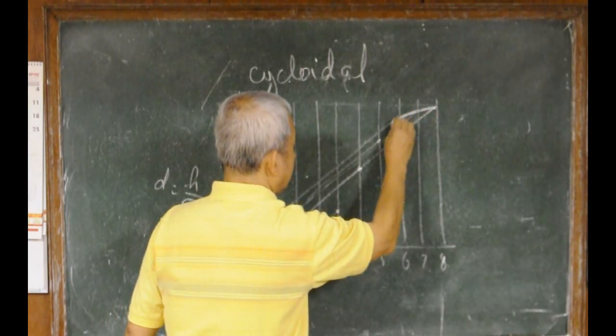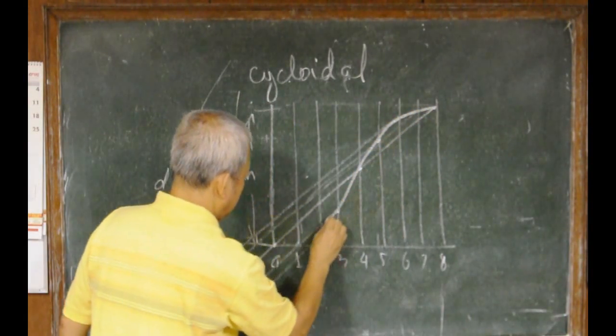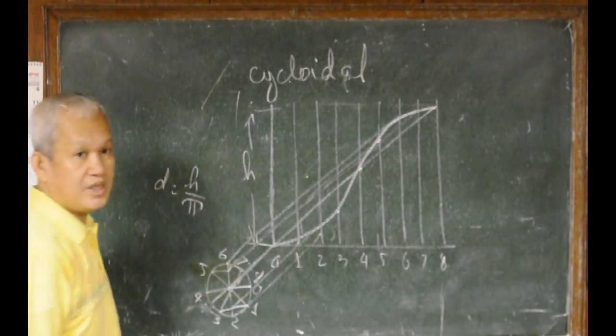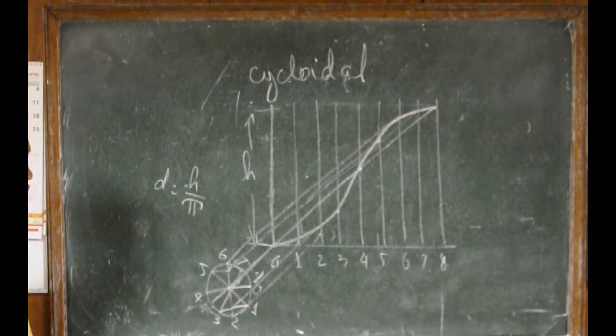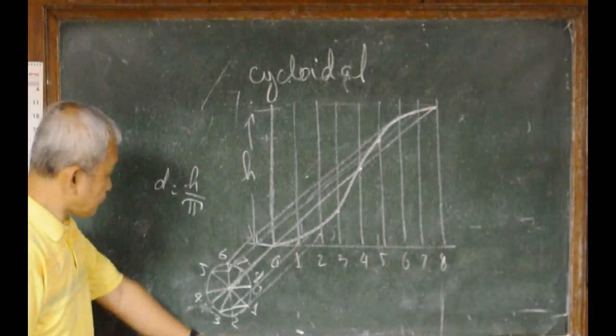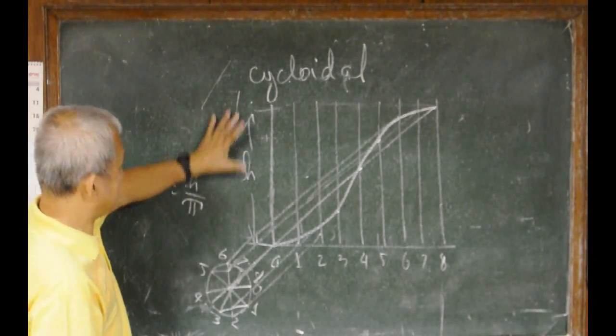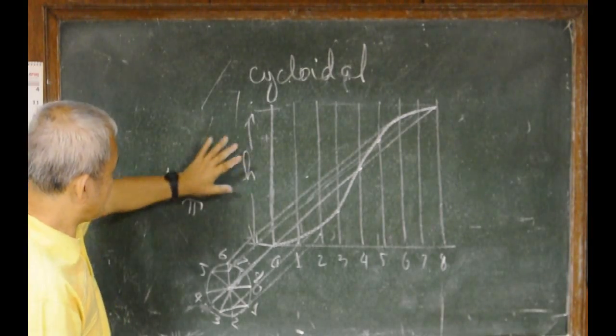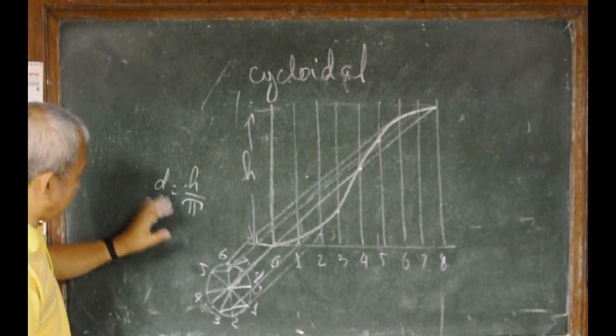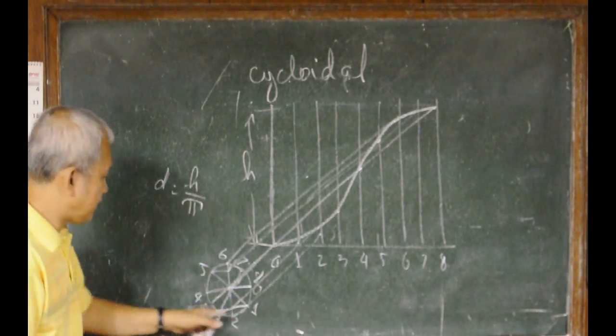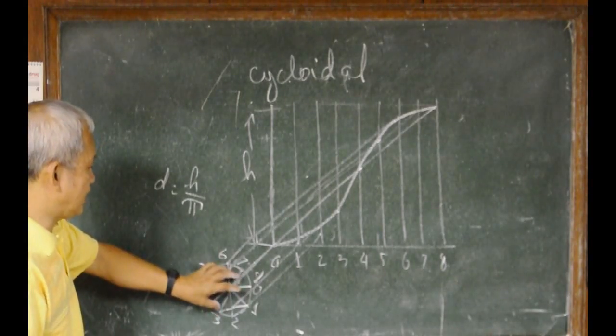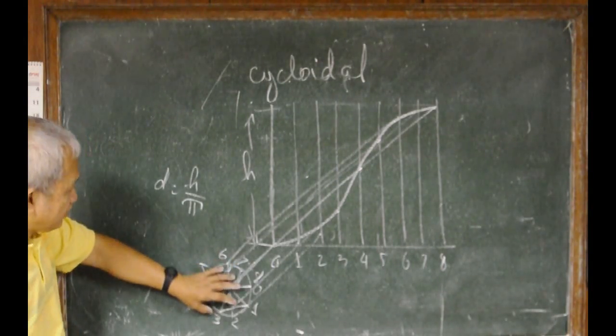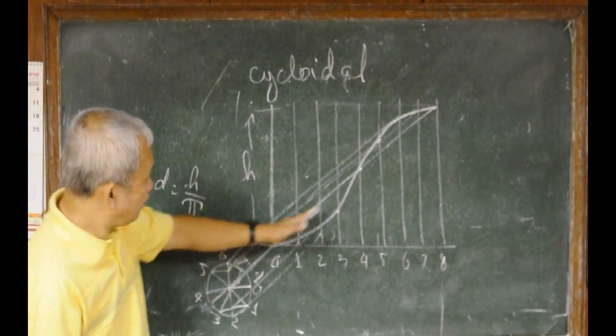This is our curve for cycloidal motion. Again, this height has to be divided by pi to be able to determine the diameter of this circle here, which we are going to use in the construction of our curve.